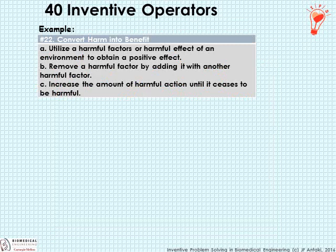Here's one example just to give you an idea of what I mean. This is Inventive Operator number 22, Convert Harm into a Benefit. It has three subtypes: A — utilizing harmful factors or harmful effects of an environment to obtain a positive effect; B — remove a harmful factor by combining it with another harmful factor; and C — increase the amount of harmful action until it ceases to be harmful. Rather interesting and rather abstract, so let me give you an example.